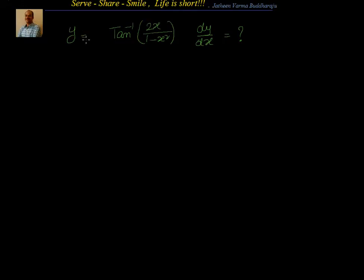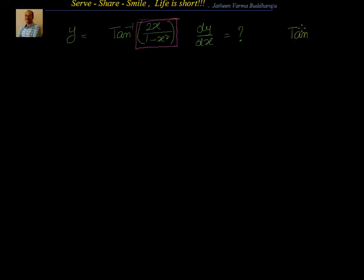We know the normal way where we have y equal to tan inverse of 2x by 1 minus x square. I can apply the chain rule and find it out. So let's spend a couple of minutes to understand what the answer will be, then we will see how to use the substitution method. If I want to find out the derivative of tan inverse of 2x by 1 minus x square, I will treat 2x by 1 minus x square as a different variable. I know that dy by dx of tan inverse x is 1 by 1 plus x square.